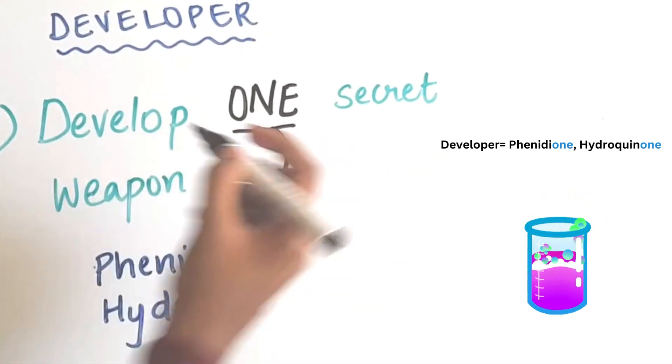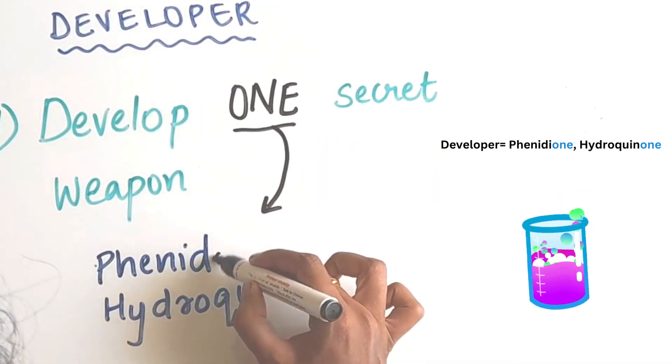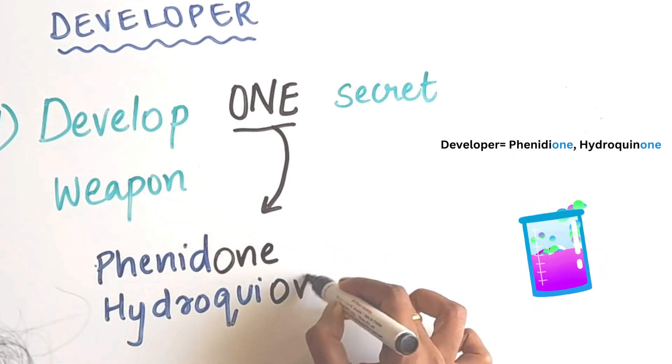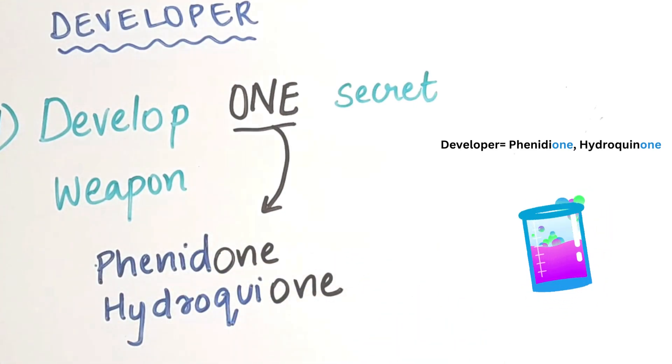One will help you remember the words phenidone and hydroquinone, which are developers. They both end with the letter O-N-E.